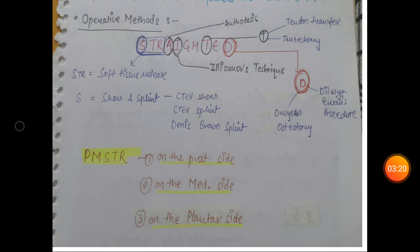Now coming to operative methods for CTEV: STRAITED is a mnemonic. STR stands for soft tissue release, S for shoes and splints, A for arthrodesis, I for Ilizarov's technique, D for tendon transfer and discectomy, and D for Droid osteotomy and Delvin's Evans procedure. PMSTR is posteromedial soft tissue release.